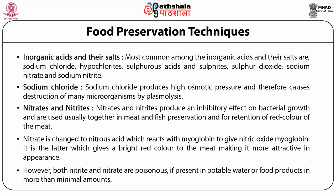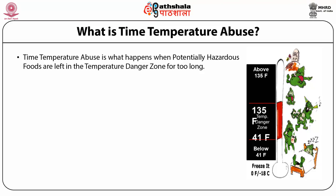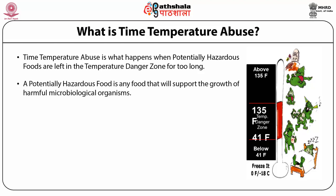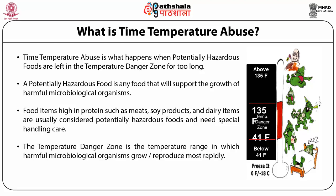Nitrates and nitrites produce an inhibitory effect on bacterial growth and are used together in meat and fish preservation, also for retention of red color of meat. Nitrate is changed to nitrous acid, which reacts with myoglobin to give nitric oxide myoglobin, giving a bright red color to meat. However, both nitrite and nitrate are poisonous if present in potable water or food in more than minimal amounts, which is why their generous use as preservatives has been questioned. Time-temperature abuse occurs when potentially hazardous foods are left in the temperature danger zone too long.